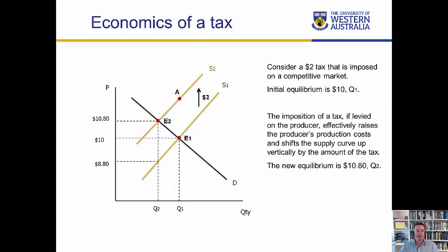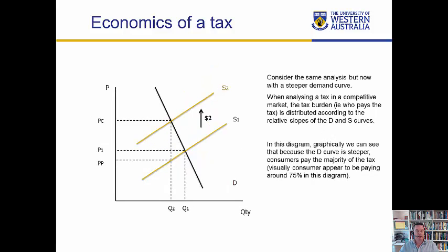What I've done is changed this diagram. I've kept the supply curves roughly similar, although I have reduced their slope a little bit, but I've substantially increased the slope of the demand curve — so the demand curve is much steeper now. When the same $2 tax is imposed, you can see that the price consumers pay increases from P1 up to PC, whereas the amount producers get to keep falls from P1 down to PP. So the burden of the tax, once we change the slopes of these curves, is falling far more heavily on consumers in this example.